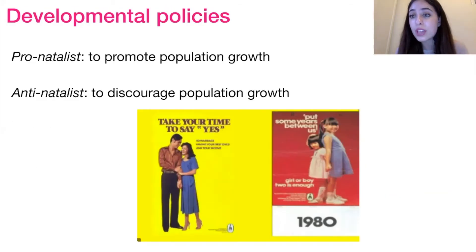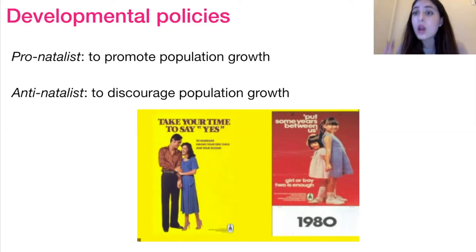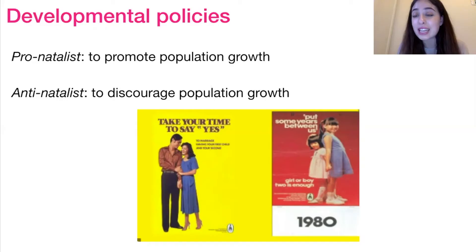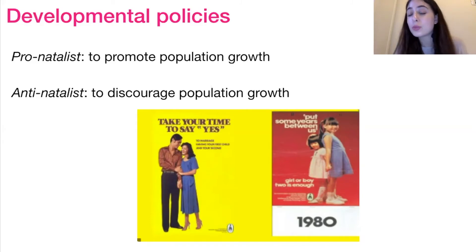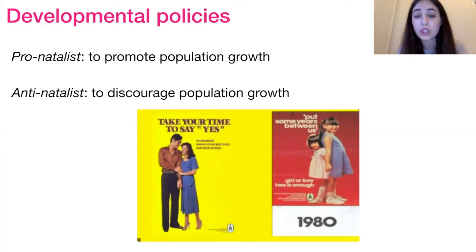Governments have the power to encourage or discourage birth and fertility rates with policies and legislation — either with pronatalist or antinatalist policies. Pronatalist policies promote population growth, while antinatalist policies discourage it. Below is an example of an antinatalist policy by Singapore — pamphlets saying 'take your time to say yes' and 'put some years between us' to discourage birth rates and marriage, and reduce population growth rate.